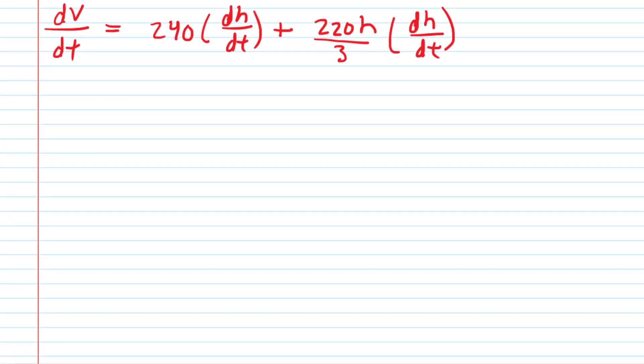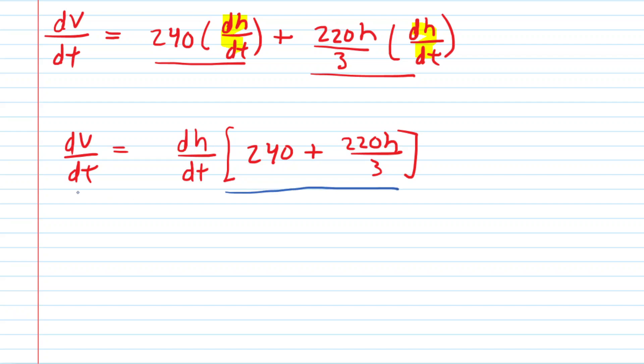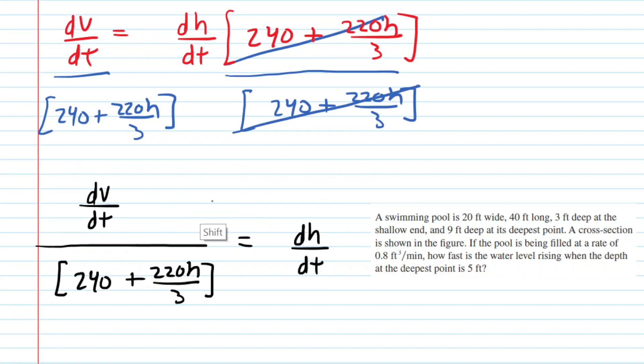Now let us notice that we have a common factor here of dh/dt. So what we will do is factor that out. We're going to factor out a dh/dt, and when we do so, in the first term that's going to leave us with 240, and in the second term that would give us 220h over 3. Now we recall the question was asking, how fast is the water level rising? So we're actually trying to solve for dh/dt, which means we're going to divide both sides of this by the term 240 plus 220h all over 3. That will cancel it out on the right-hand side, so let's rewrite what we presently have.